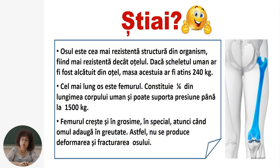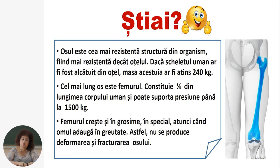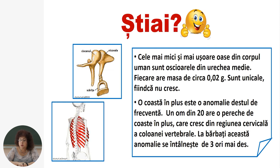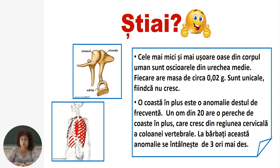Știai că osul este cea mai rezistentă structură din organism, mai rezistentă decât oțelul? Dacă scheletul uman ar fi fost alcătuit din oțel, masa acestuia ar fi atins 240 kg. Cel mai lung os din corpul uman este femurul, care constituie o pătrime din lungimea corpului uman și poate suporta presiunea până la 1500 kg. Femurul crește și în grosime, în special atunci când omul adaugă în greutate. Cele mai mici oase din corpul uman sunt oscioarele auditive situate în urechea medie: ciocanașul, nicovala și scărița, fiecare cu masa de circa 0,02 grame.